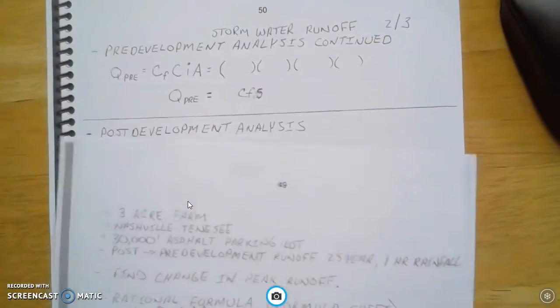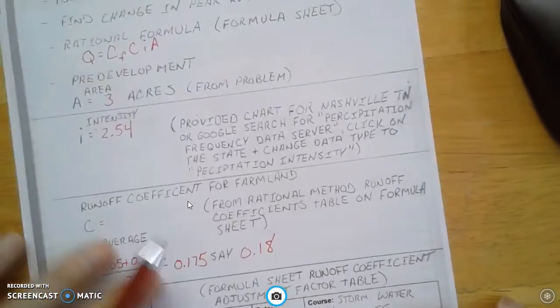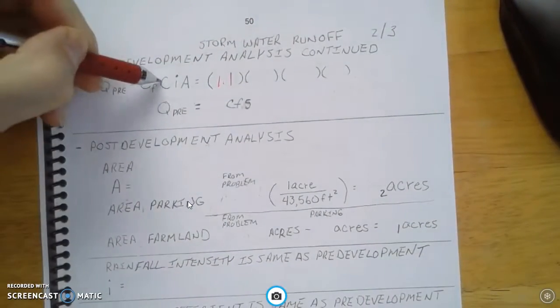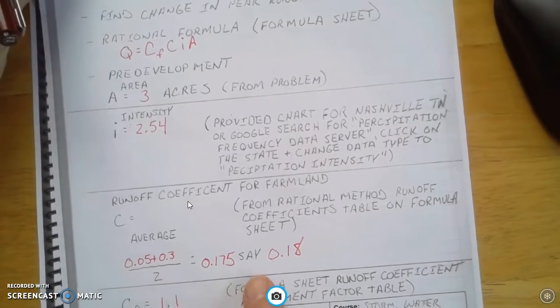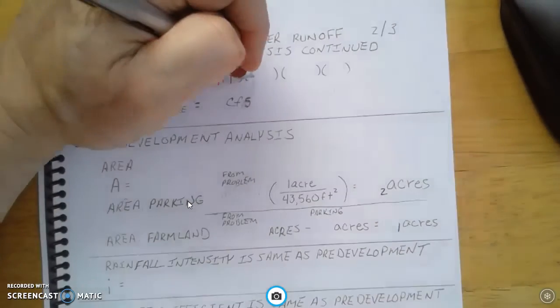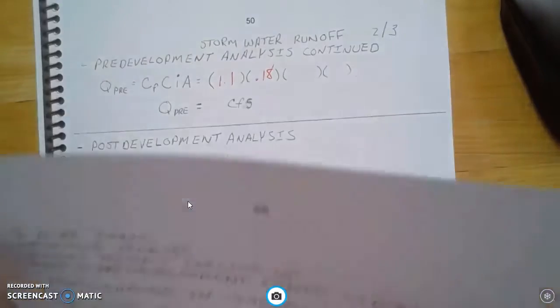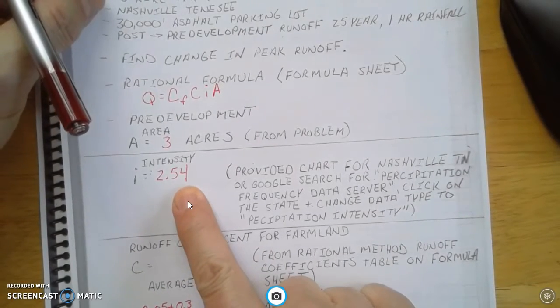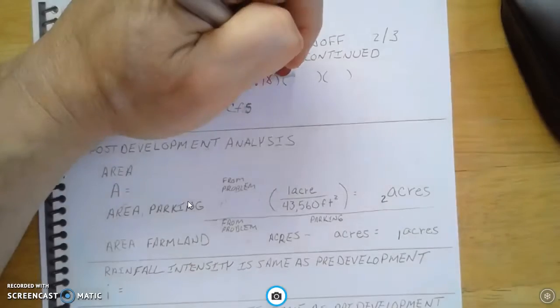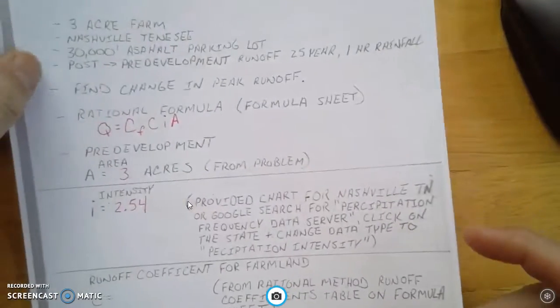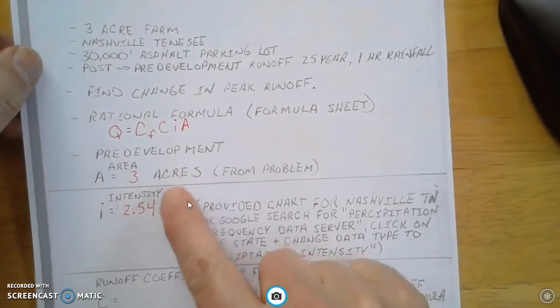So up here, I'm going to put in 1.1. The C value was the average of farmland, and we're going to use 0.18. Then the I is intensity, and that came from that chart that we looked at, and that's 2.54. And then the A value, which is acres, is 3.